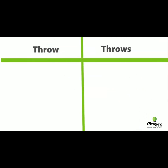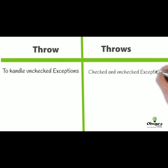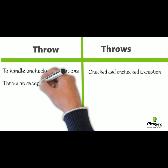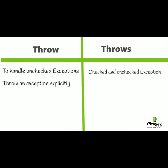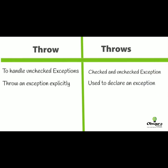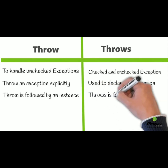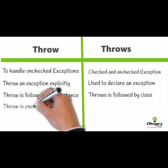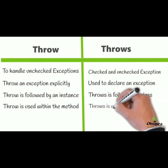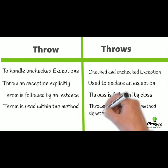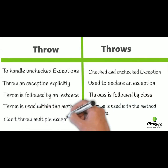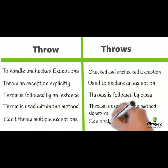Let's summarize the differences between throw and throws. Throw handles unchecked exceptions; throws handles checked and unchecked exceptions. Throw is used to throw an exception explicitly; throws is used to declare an exception. Throw is followed by an instance; throws is followed by a class. Throw is used within the method; throws is used with the method signature. You cannot throw multiple exceptions, but you can declare multiple exceptions.